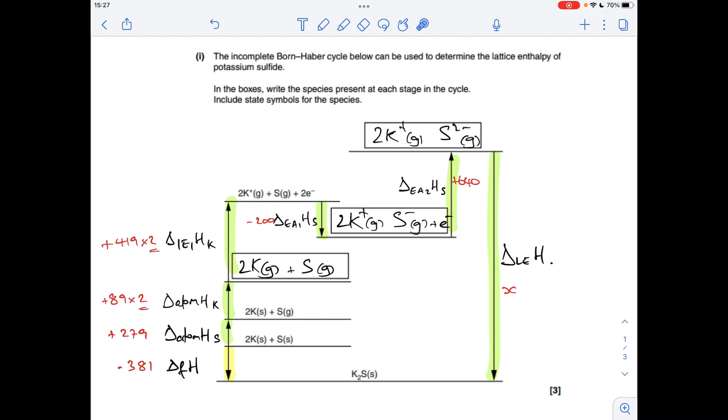Moving on to the calculation now for the lattice enthalpy. So you'll notice I've put the numbers in and I've got the highlighted roots. So I'll just talk about the roots first of all. So there's two roots to go from elements to the lattice compound. There's the simple enthalpy change of formation.